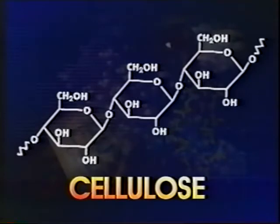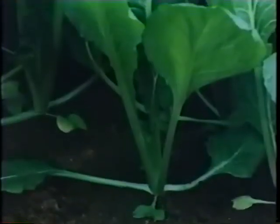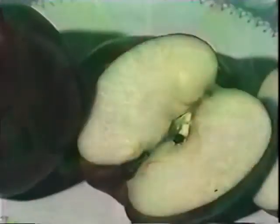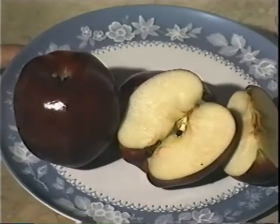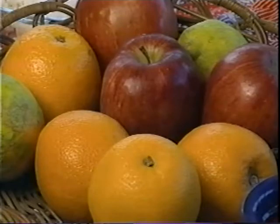In plants, the major polysaccharides are cellulose and starch. Cellulose is a principal component of the plant cell wall. It is a polymer of glucose molecules of the beta form. Cellulose forms fibrous chains found in the stems and leaves of plants and in the peel, flesh, and seeds of fruits. Cellulose constitutes the so-called fiber in our diet.